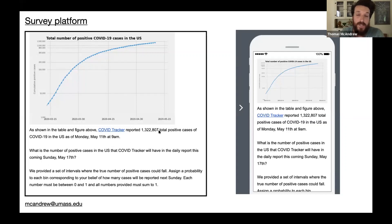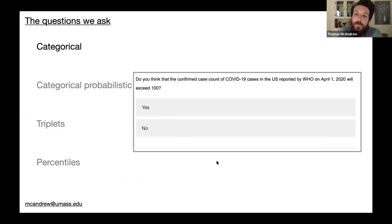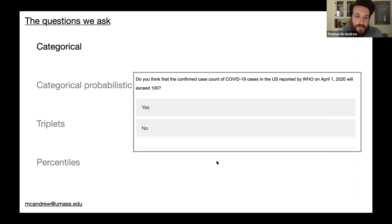There are four types of questions we can ask experts. The first is categorical — for example: do you think the confirmed case count of COVID-19 in the U.S. reported by the WHO on April 1st will exceed 100? This is a deterministic yes or no question, though it doesn't have to be limited to two options.